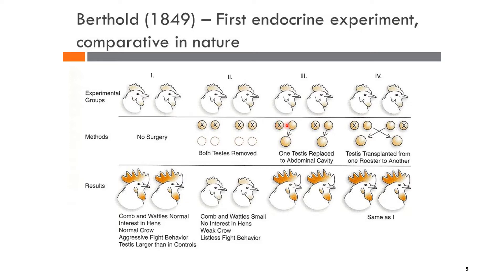After that, the roosters in group two were re-implanted with their own testicles. For the third group, only one of their testicles was removed, and the roosters were transplanted with the testicles of another rooster, as shown in the figure.